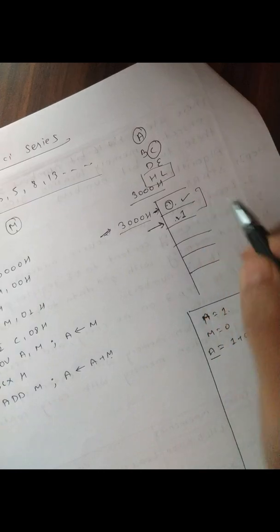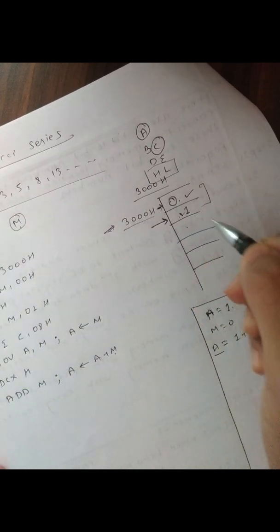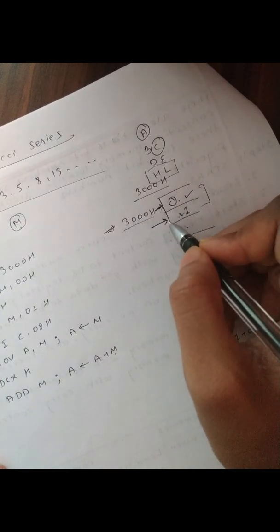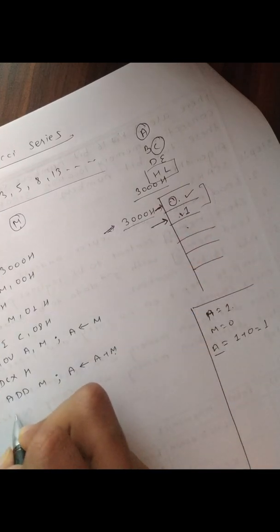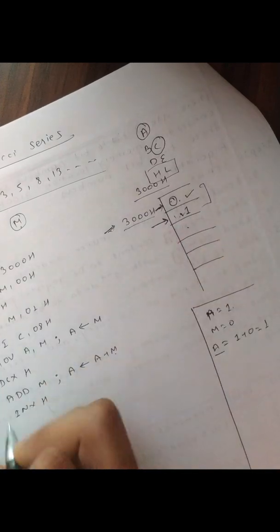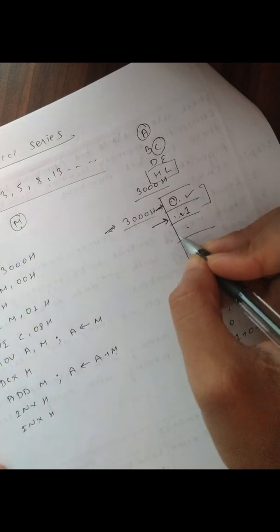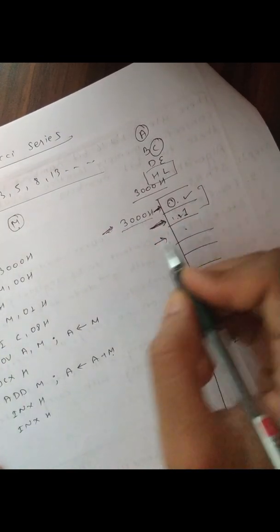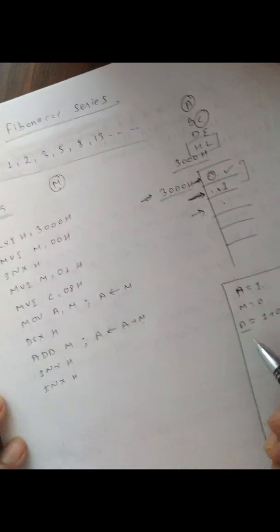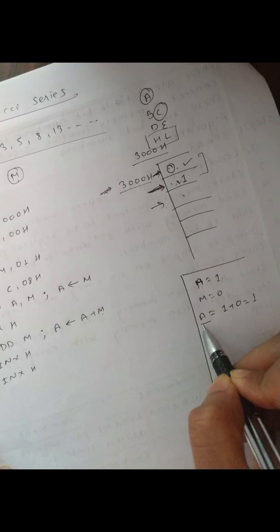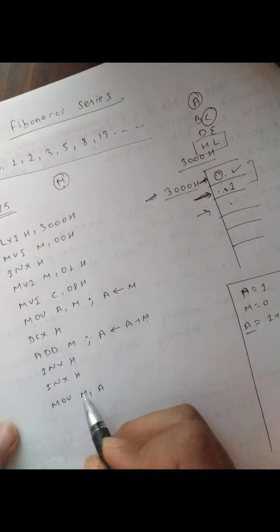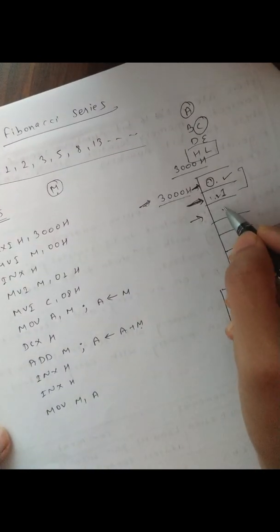We have the result in A, but we need to store it in the next location. We increment the memory pointer twice using INX H twice — first it moves here and then here. Now HL is pointing to the new location, and we use MOV M, A to store the accumulator value into that memory location. The result, which is 1, is now stored there.